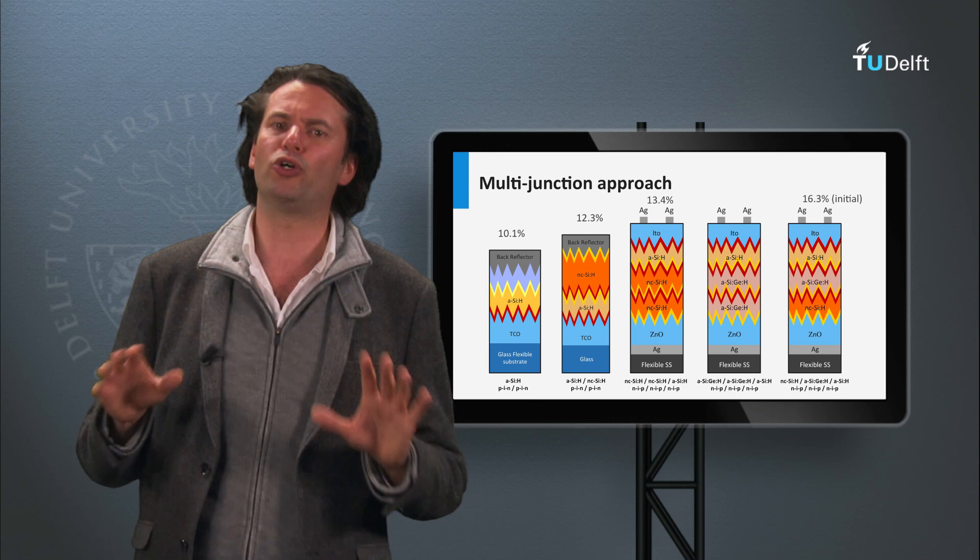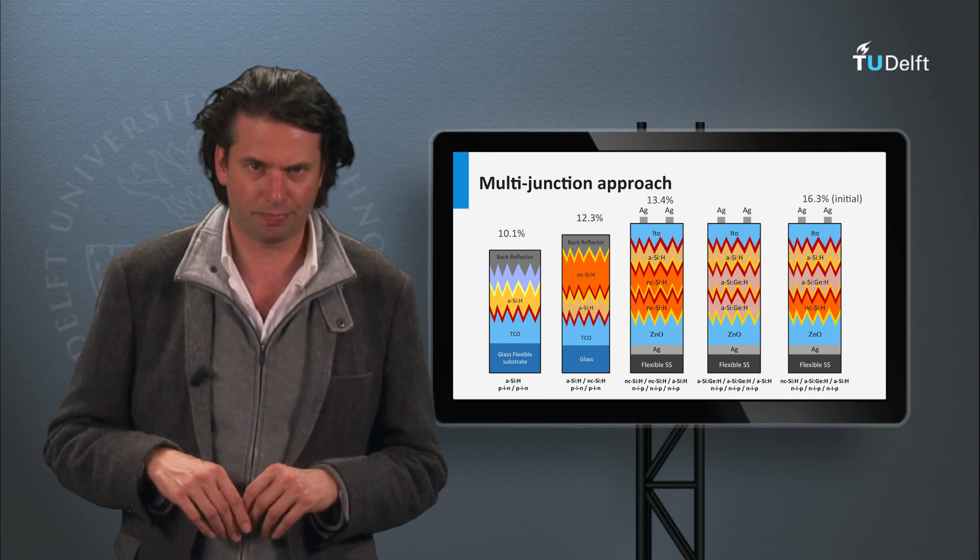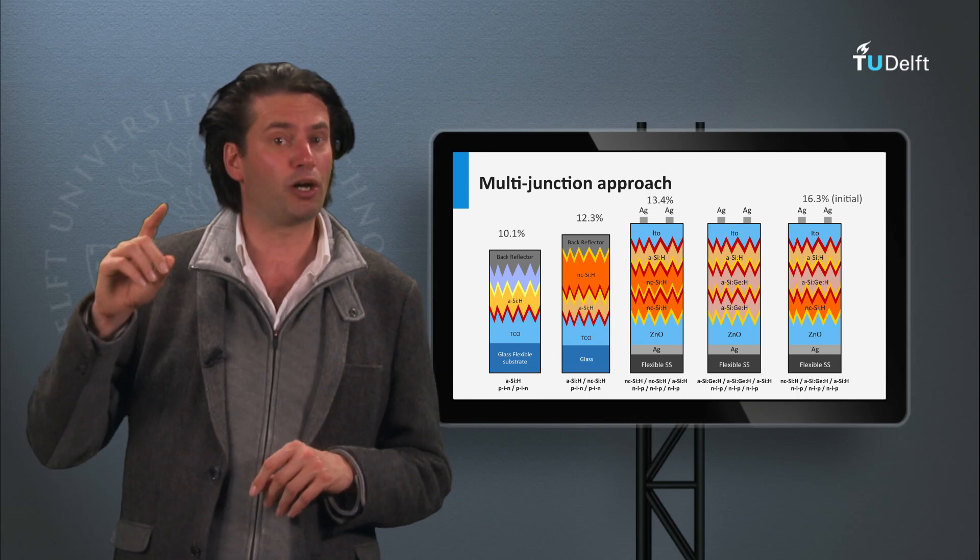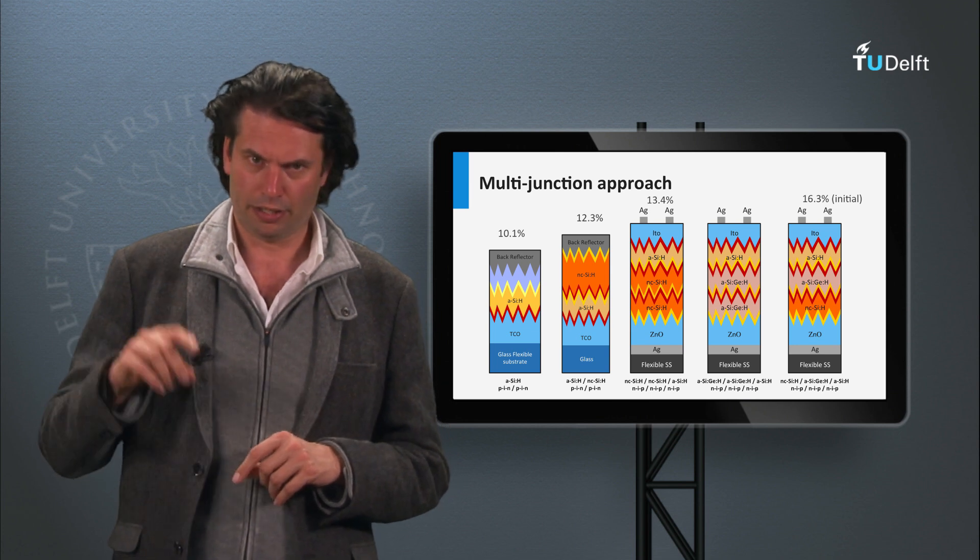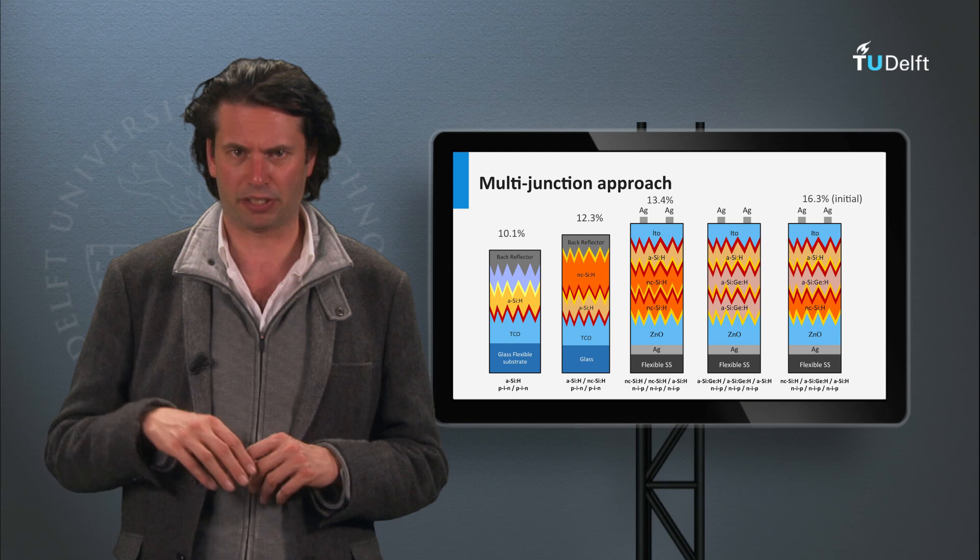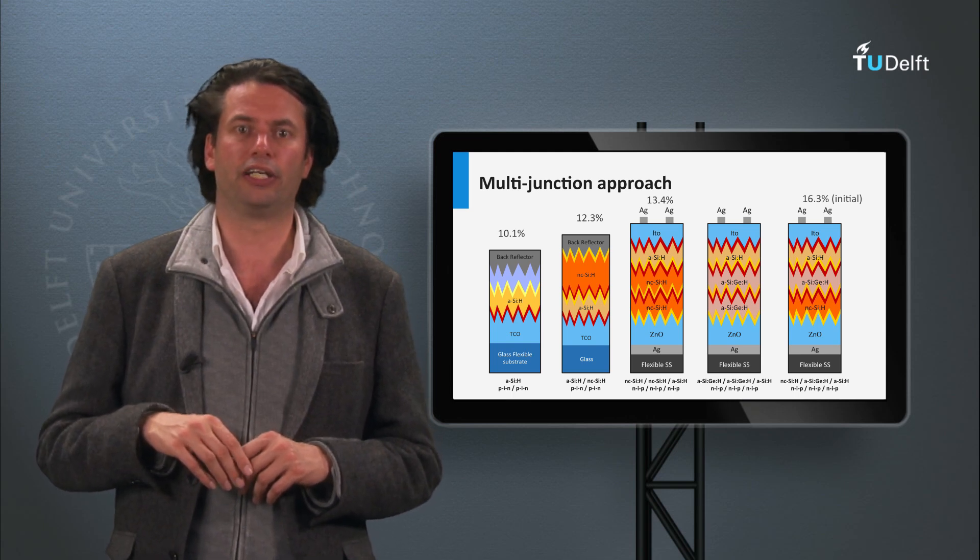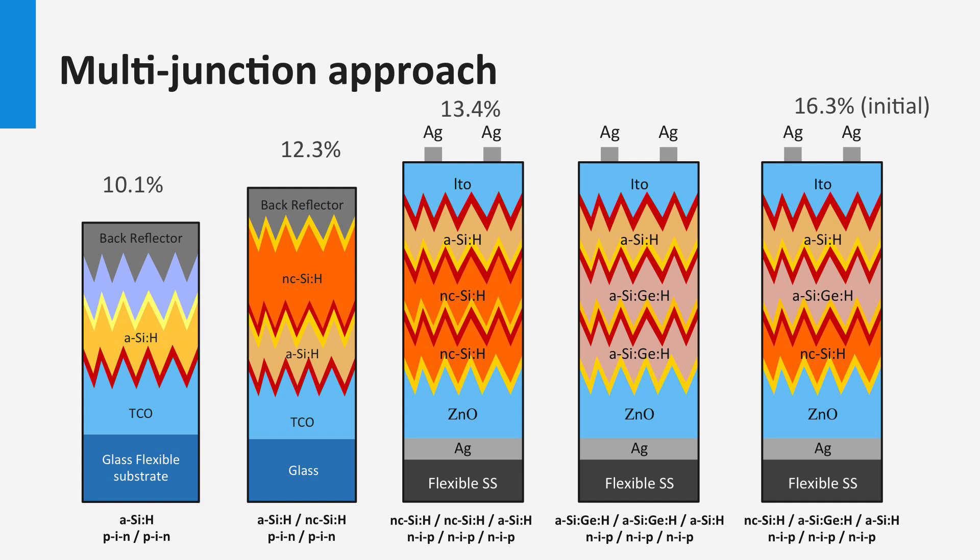In this slide you see the most studied and developed thin-film silicon concept on lab scale. The record single junction amorphous silicon solar cell developed by Oerlikon Solar has an efficiency of 10.1%. The best single junction nanocrystalline silicon solar cell is 10.7% as obtained by EPFL in Neuchatel, Switzerland. The best result for a micromorph double junction is 12.3% obtained by Oerlikon Solar. LG in Korea has the record for the amorphous-nanocrystalline-nanocrystalline triple junction with 13.4%. United Solar achieved an initial efficiency of 16.3% for the triple junction based on amorphous silicon, amorphous silicon-germanium, and nanocrystalline silicon.